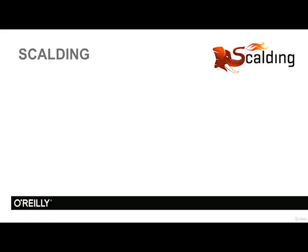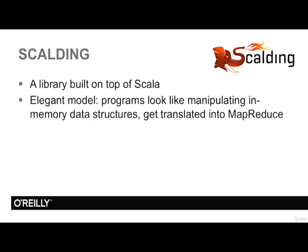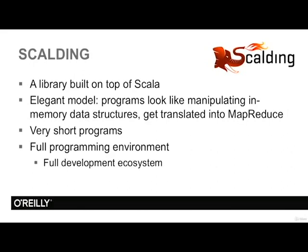Our next choice is Scalding. Scalding is a library built on top of Scala. Scala is a modern programming language — a descendant of Java, runs on JVM, compatible with Java programs, and you can mix and match Java and Scala parts of a program. Scalding has a very elegant model: programs look like we are manipulating in-memory data structures from standard Scala libraries, like collections and lists, and these programs get translated into MapReduce. Programs require very few lines of code and are easy to read. Scalding also provides a full development ecosystem with modern IDEs and tools for continuous integration testing.